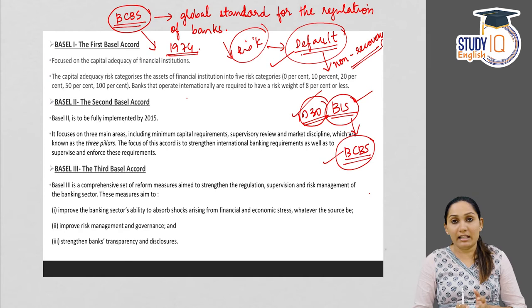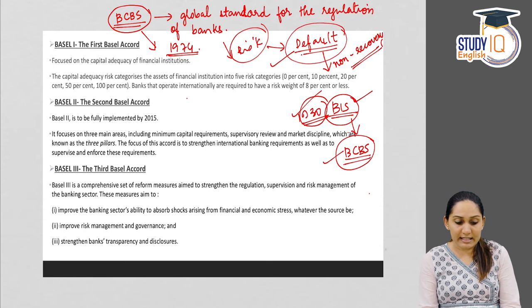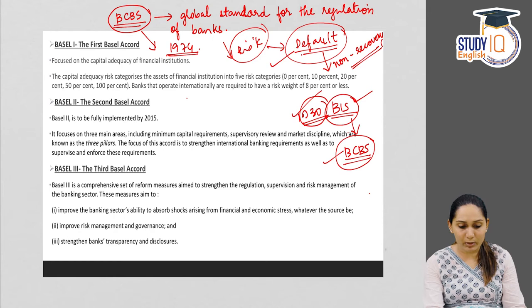The Basel Committee on Banking Supervision issued three sets of regulations known as Basel 1, Basel 2 and Basel 3 respectively. We will discuss these three norms in detail, along with the three tiers of capital: Tier 1, Tier 2 and Tier 3 capital.